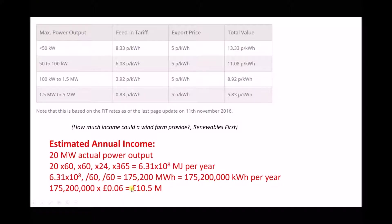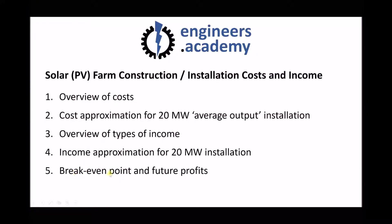Hopefully you've noticed that this income is exactly the same as the income from our wind farm, and the reason for that is because our actual power output is exactly the same — we used this to give a direct comparison of the two installations. Our break-even point for our solar farm is going to be around 15 years; the cost was around £150 million and the income per year was around £10 million. After that payback period, the future profits are likely to be around £10.5 million per year. These projections are based on the export price of electricity, and in actual fact there are government incentives that would increase the amount of income per kilowatt hour, which we'll look at in the next video.